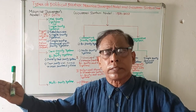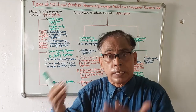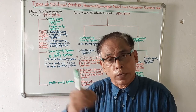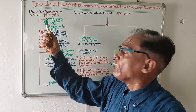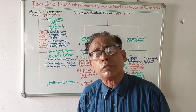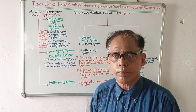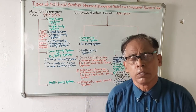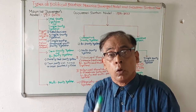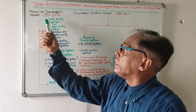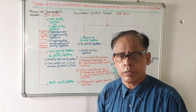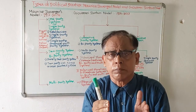But political parties are not the same; there are different types of political parties. We will be clear about the varieties of political parties in the world if we study in detail two important models. One model has been given by Maurice Duverger, and another model has been given by Giovanni Sartori. Maurice Duverger was born in 1917 and died in 2014.